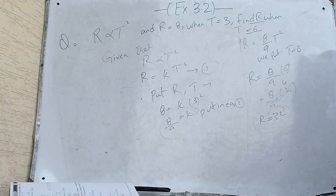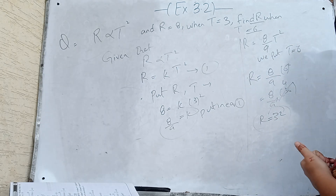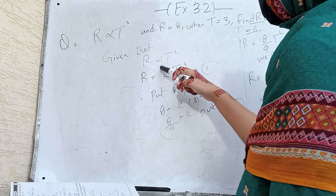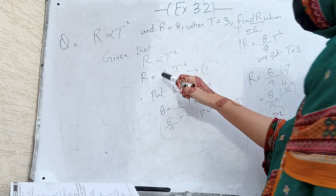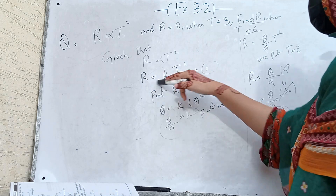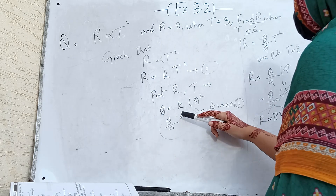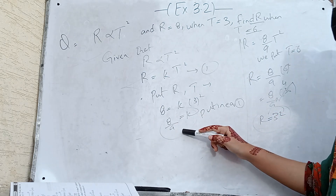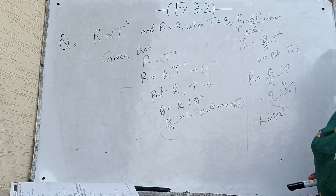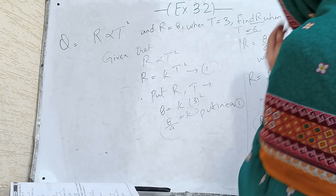So r is directly proportional to t squared, r equals 8 when t equals 3, find r when t equals 6. We set up r equals kt squared, found k equal to 8 by 9, substituted back to get r equals (8/9)t squared, and with t equal to 6 the required answer for r is equal to 32.